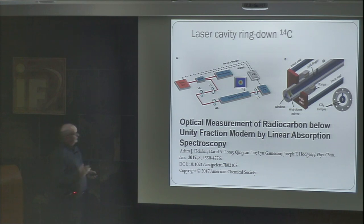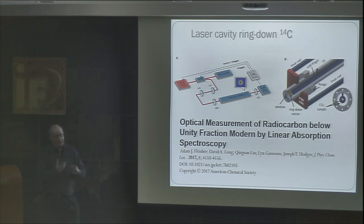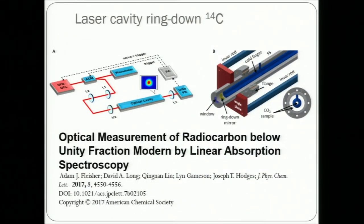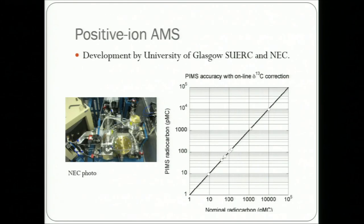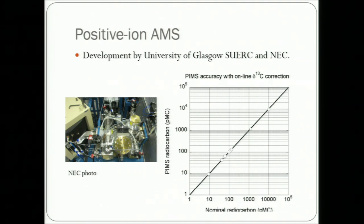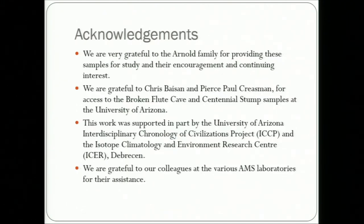To summarize the final slides: people are now talking about newer technologies for radiocarbon, still under development. There is a laser cavity ring-down method which has some promise. There's also a method using positive ions injected into an AMS machine, which hasn't worked very well so far, getting down to something like 10% modern carbon. When somebody gives this talk again in a few years, we may have other technologies to add to AMS — and that's the end of my talk.